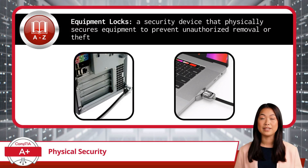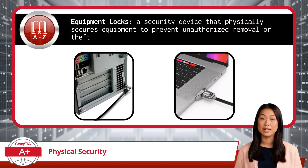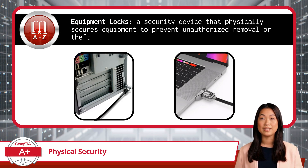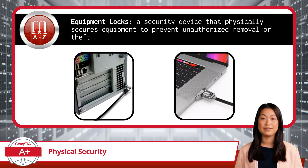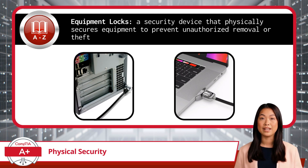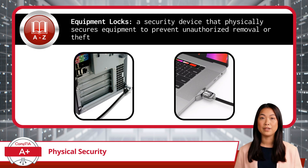But it's not just doors you need to worry about — your equipment should be under lock and key too. Equipment locks are a security device that physically secures equipment to prevent unauthorized removal or theft. Think of them as digital padlocks: easy to attach, but tough to remove without the right tools. They're perfect for those high-traffic areas where you can't always keep an eye on your gear.